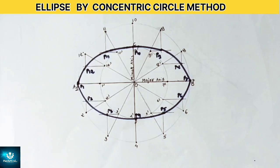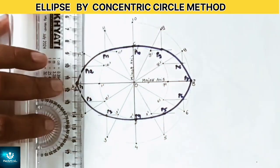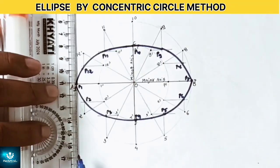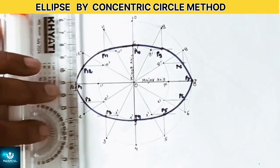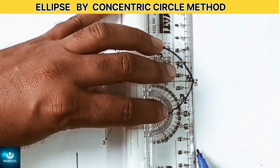In the last, we give dimensions. The major axis is 100 mm and minor axis is 60 mm. Give the dimensions by unidirectional system of dimensioning or aligned system of dimensioning.